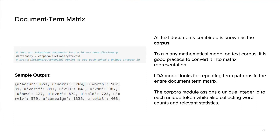The last concept is the document term matrix. All text documents combined are known as a corpus. To run any mathematical model on a text corpus, it's good practice to convert it into a matrix representation. The LDA model looks for repeating term patterns in the entire document term matrix. We convert our corpus into a document term matrix using Gensim — the corpus module assigns a unique integer ID to each unique token while also collecting word counts and relevant statistics. For example, after stemming 'accuracy' down to 'accura', it might be assigned ID 657, linking that word stem to an ID in the document term matrix.